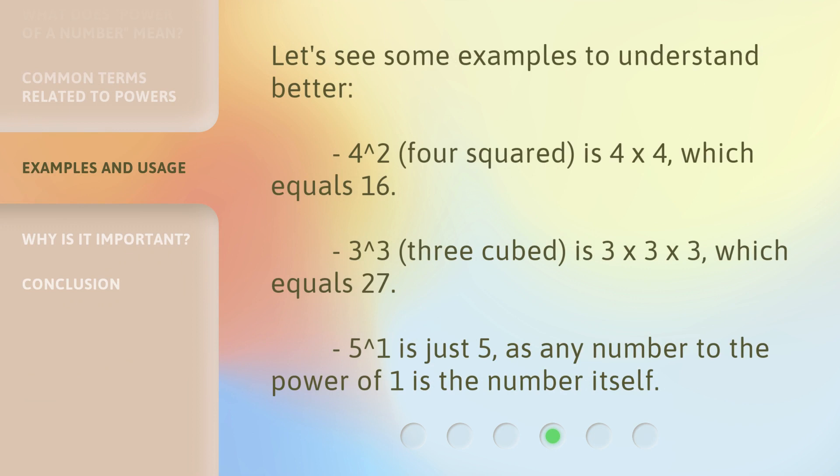Let's see some examples to understand better. 4 to the power of 2 (four squared) is 4 × 4, which equals 16. 3 to the power of 3 (three cubed) is 3 × 3 × 3, which equals 27. 5 to the power of 1 is just 5, as any number to the power of 1 is the number itself.